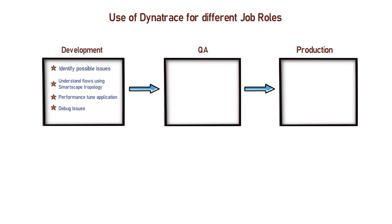Next, let's see how Dynatrace can be useful for a QA engineer during the testing phase of an application. Dynatrace can be mainly useful for a QA engineer in performance tests. Install Dynatrace One Agent in your performance testing environment and start your performance testing by generating traffic. While the test runs, you can do live full-stack monitoring of your application and infrastructure to find the breaking point.